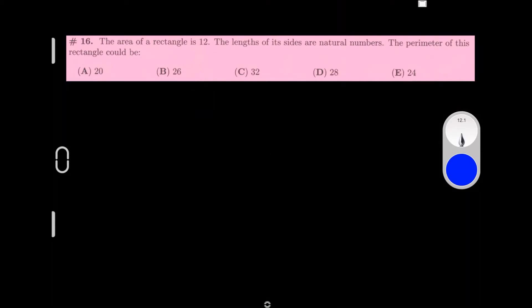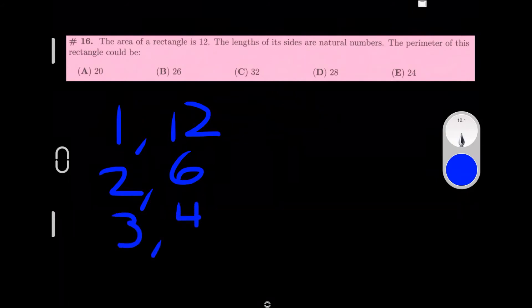Question 16, the area of the rectangle is 12. The length of its sides are natural numbers. The perimeter of the rectangle could be. Let's look at some numbers that you can multiply to get 12. There's 1 and 12, there's 2 and 6, and 3 and 4, or you can do 4 and 3, 6 and 2, and 12 and 1, but there's totally only 3. If we find the perimeter for the first one, it would be 12+1, which is 13, and that would be for 2 of the 4 sides, so you do 13×2 and you would get 26 for the perimeter. So B could be a possible answer.